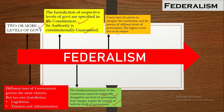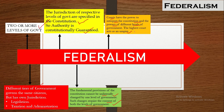Coming to the next important feature: courts will have the power to interpret the constitution and explain the powers of the different levels of governments in case of any dispute. The highest court acts as an umpire to settle disputes between both levels of governments in case there is any dispute.